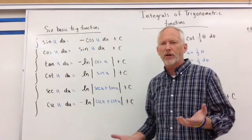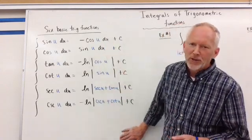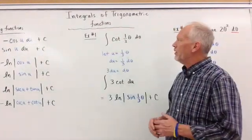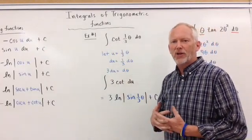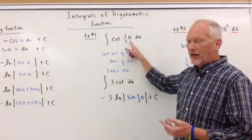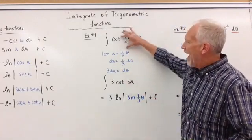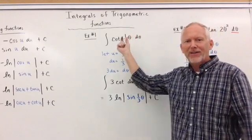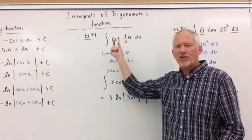Alright, so let's look and see how we can put these six basic trig functions into work here. So example number one, we're asked to find the antiderivative of cotangent of one-third theta, d-theta. So what we're going to do is we need to isolate this inside case. Anytime we have an argument that's inside a sine, cosine, tangent, cotangent, etc.